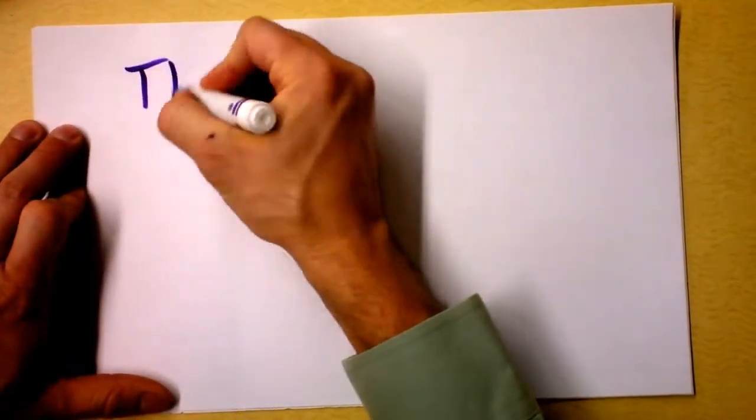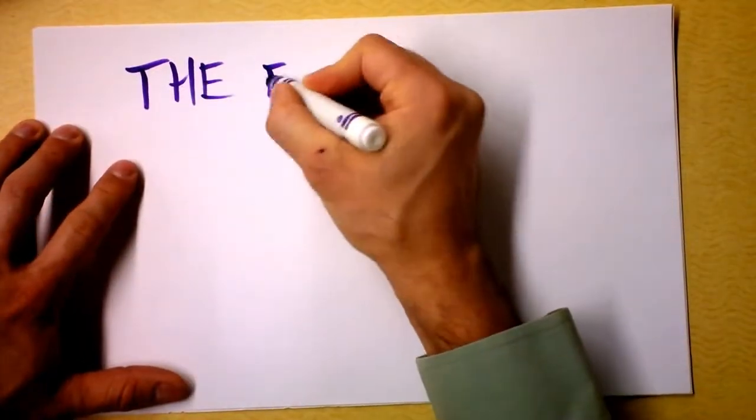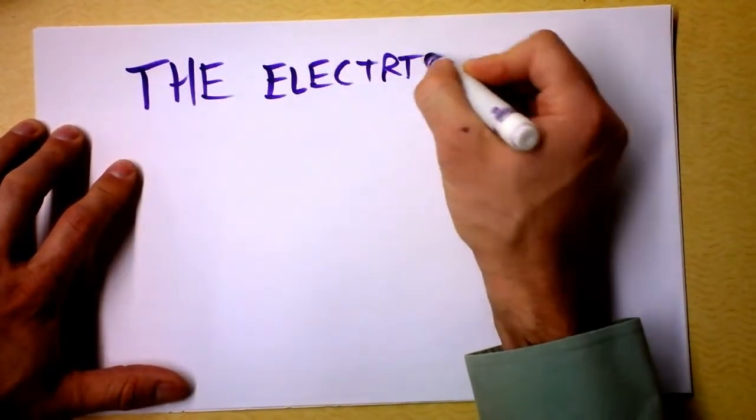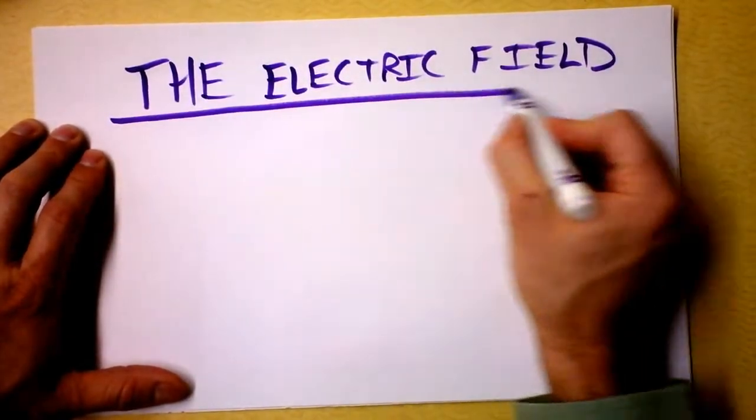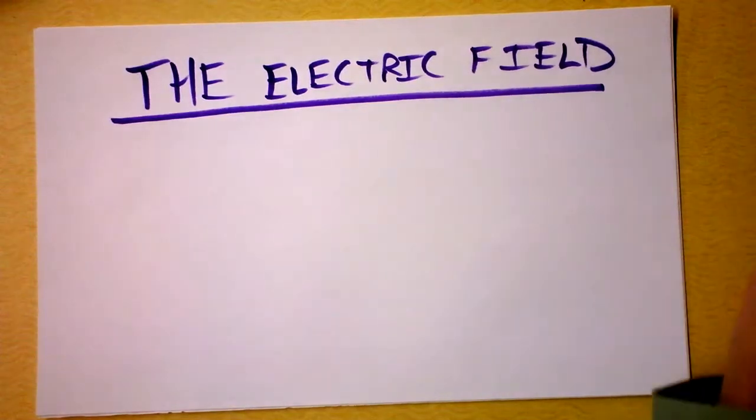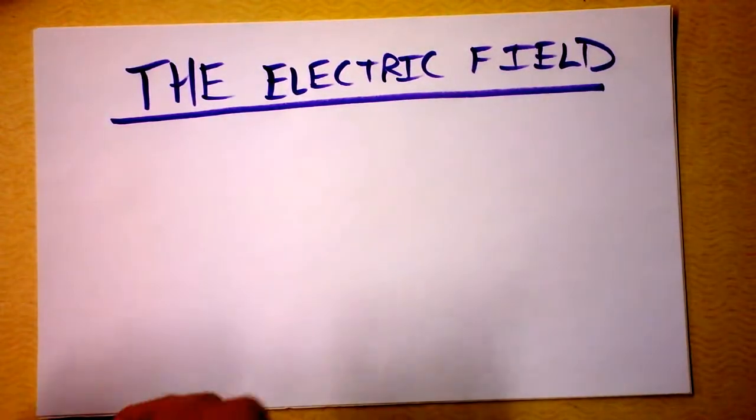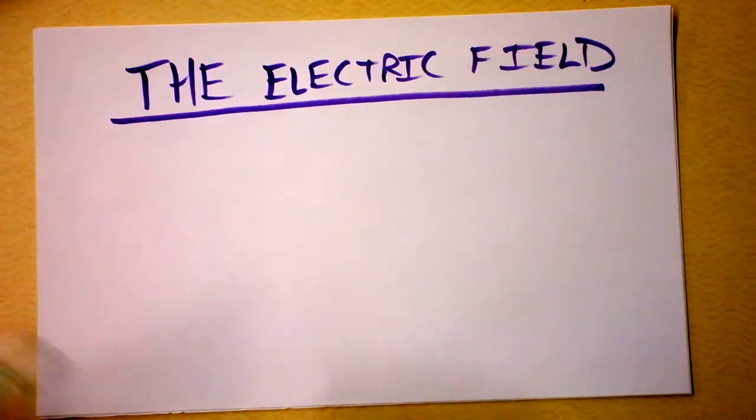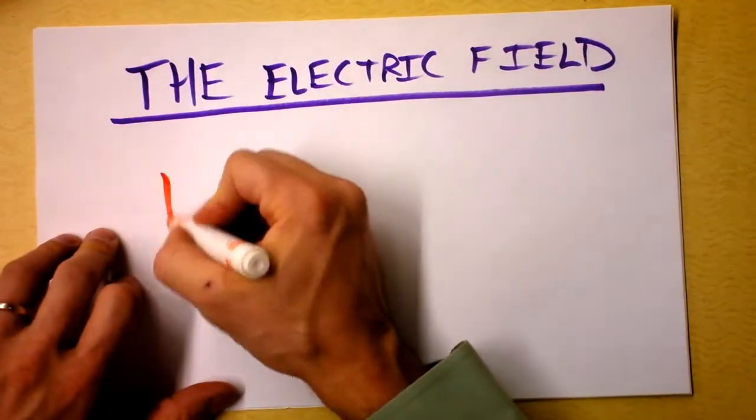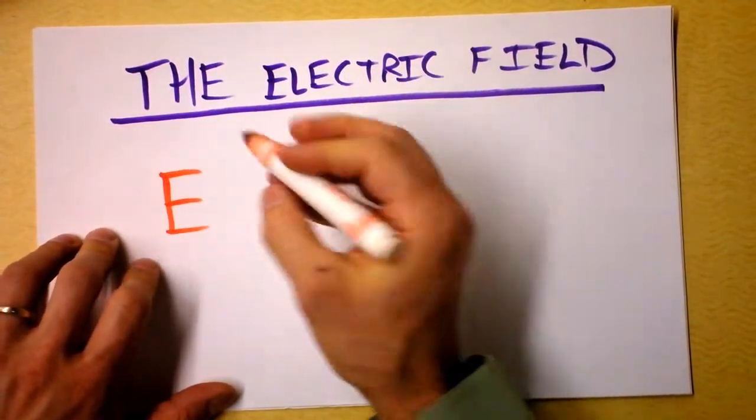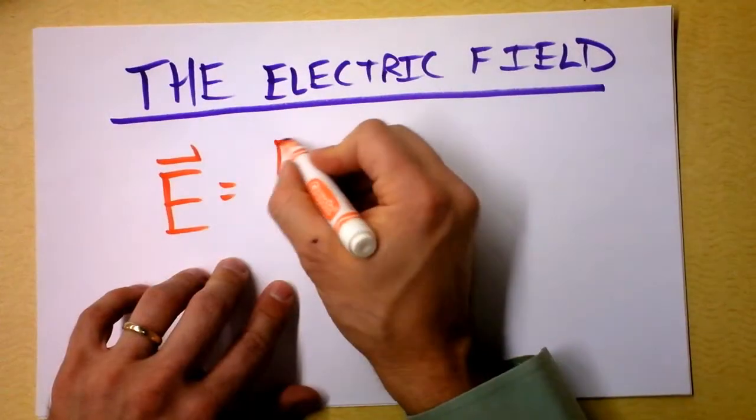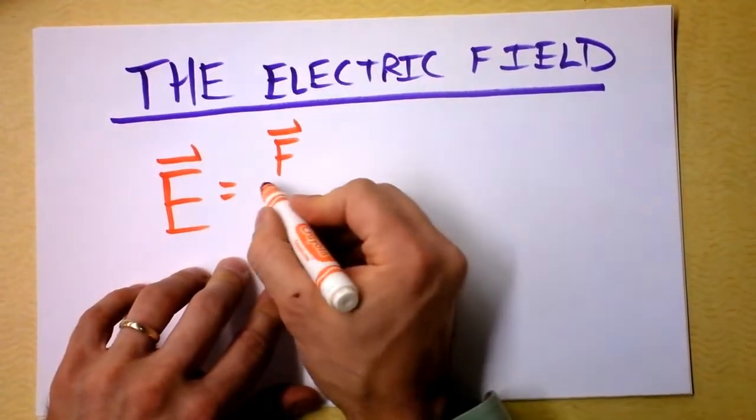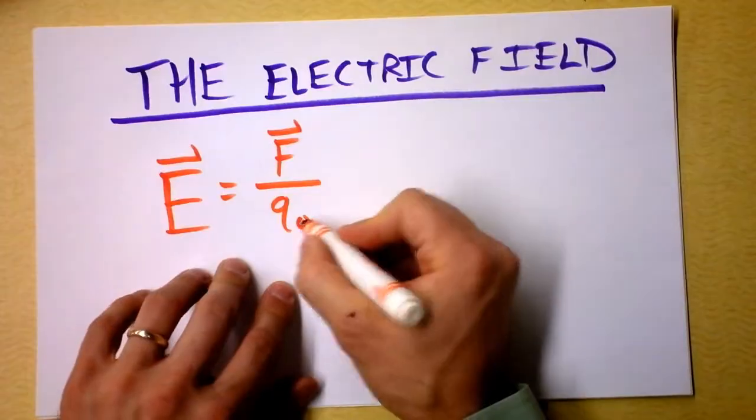The next thing I want to do today is define the electric field. This is a big day for us. The electric field. The electric field has its analogy in the gravitational field, and of course we will extend it to discuss the magnetic field as well. Electric field is defined like this. The electric field is a vector and it fills all of space. Beautiful thing, right? And it is the force felt by a charge divided by how big that charge is.